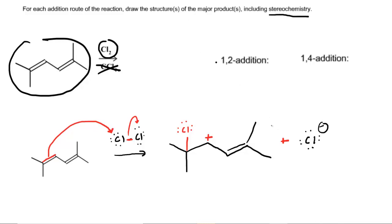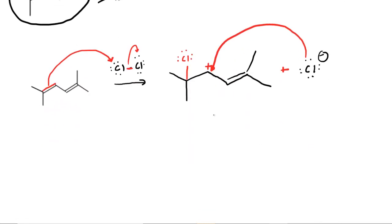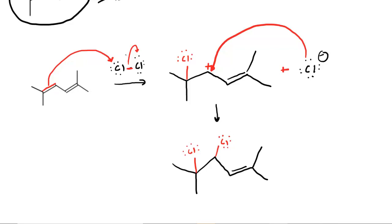That completes step one. Now because this chloride ion is negative, it is drawn to react with the positive carbocation. Negative attracts to positive, and that's exactly what happens. In the next step, we end up with the first chlorine located at this carbon and the second chlorine added at the adjacent carbon. This is what we call 1,2 addition — the first chlorine added at this carbon and the next chlorine added at the adjacent carbon.